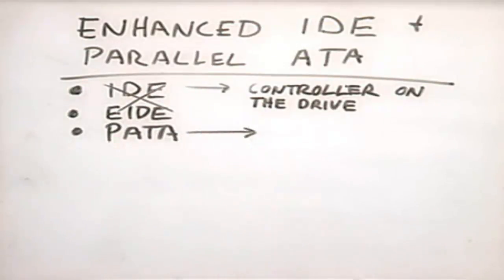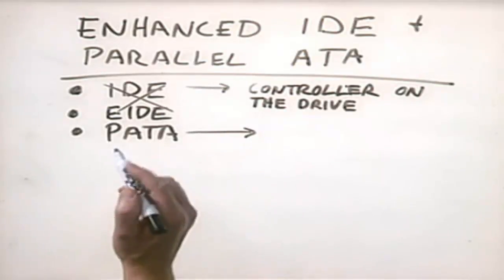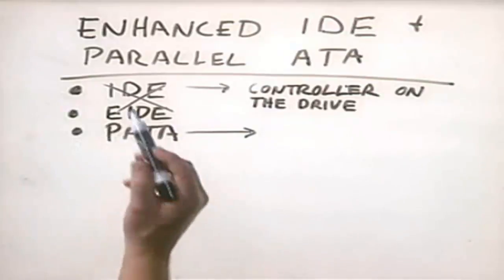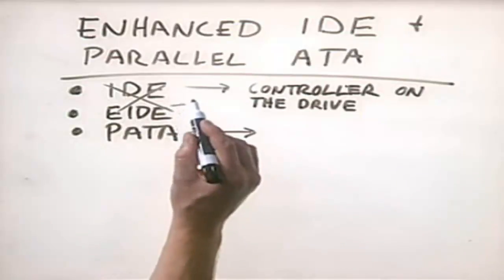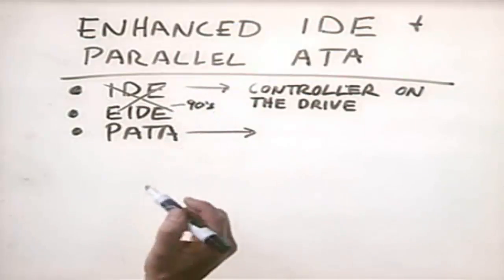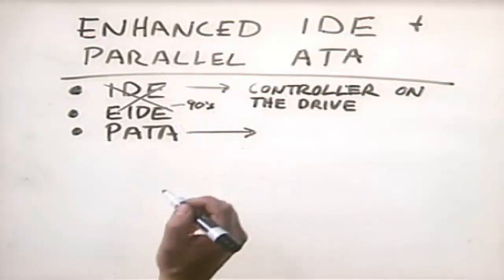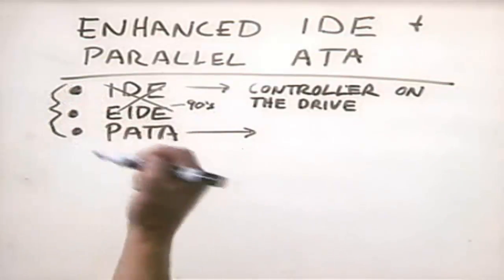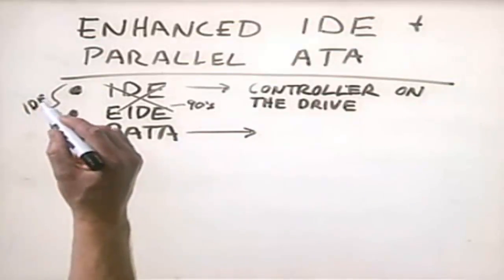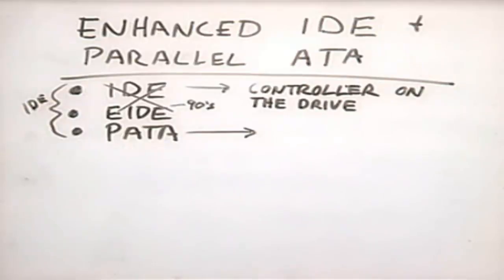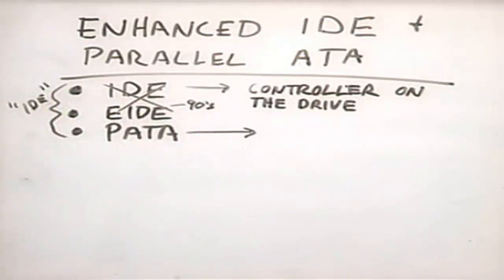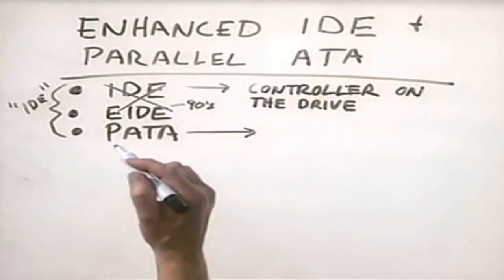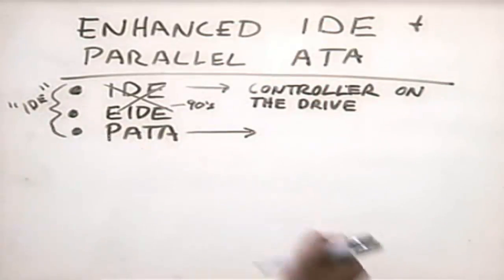You probably won't deal much with IDE or EIDE drives anymore — everything you're going to be working with will probably be parallel ATA. However, because these are all in the same family, whether you're working with an old IDE drive, an enhanced IDE drive from the early 90s, or a PATA drive, all of these will be collectively referred to in the industry as just IDE. Even a new parallel ATA 133 drive will still be called an IDE drive.